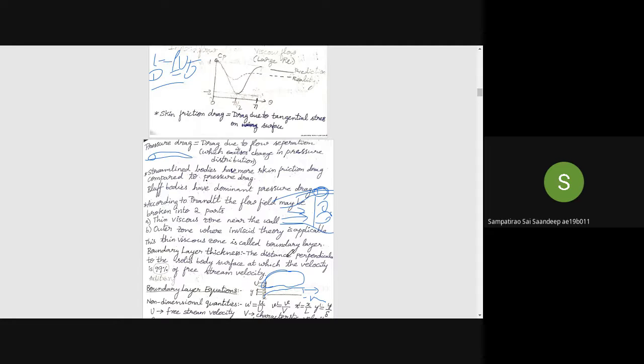Okay, you're saying thin, but how thin? That thickness is defined by boundary layer thickness. It is the distance perpendicular to the solid body surface at which velocity is 99% of free stream velocity. Strictly speaking, this is an arbitrary number—some people use 99, some 95, some 99.99—but the standard convention is 99%.